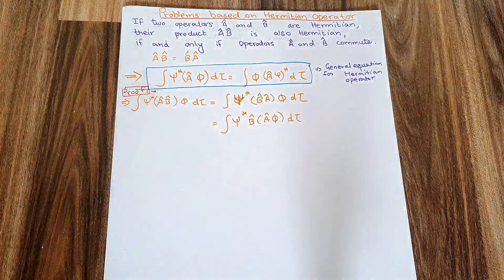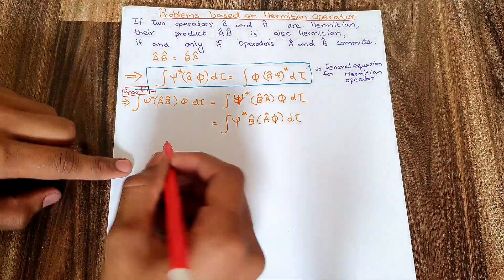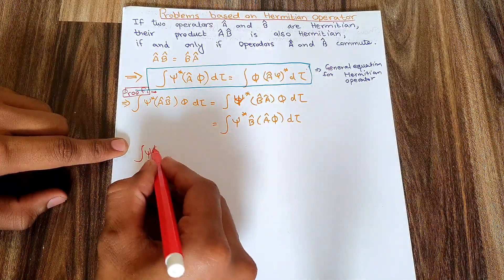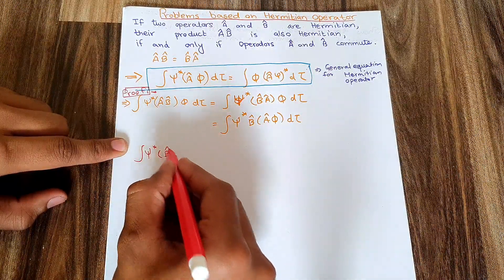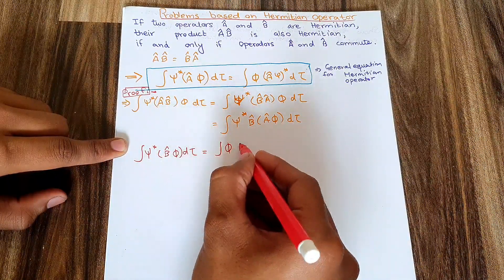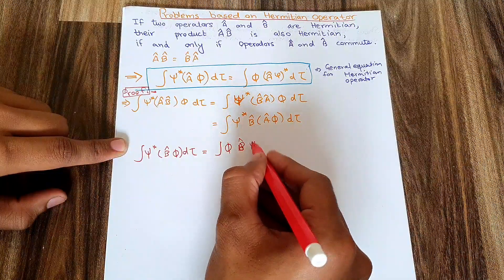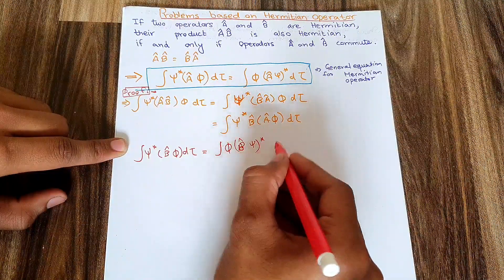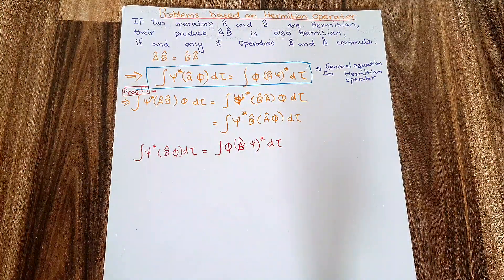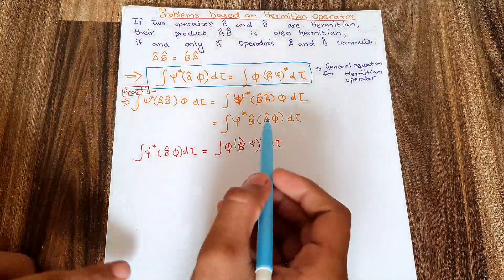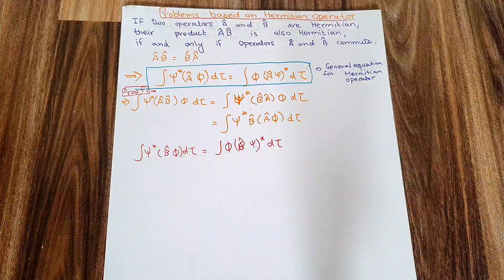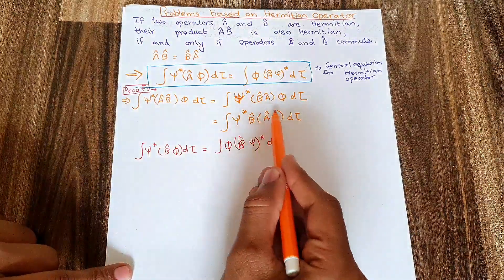If I write the general Hermitian equation for operator B, it becomes: the integral of ψ* with B applied on φ dτ equals the integral of φ with B applied on ψ* dτ. As you can see, my operator B is being applied on Aφ as a whole.